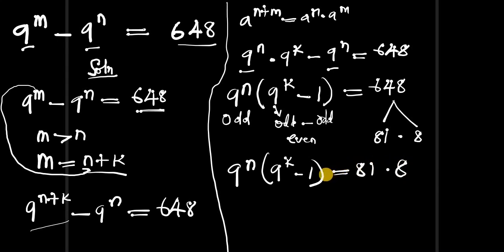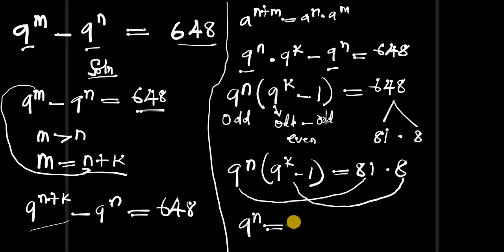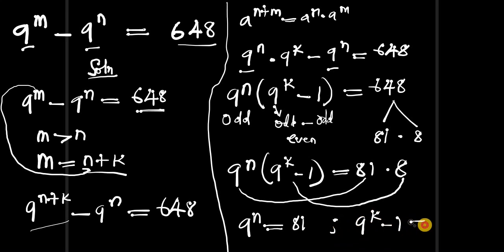So our equation becomes: 9 to the power of n times (9 to the power of k minus 1) equals 81 times 8. At this point, we equate odd to odd and even to even. The odd part 9 to the power of n equals 81, and the even part 9 to the power of k minus 1 equals 8.